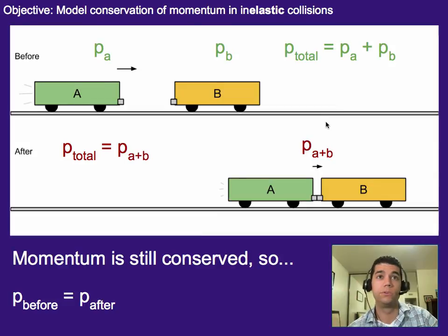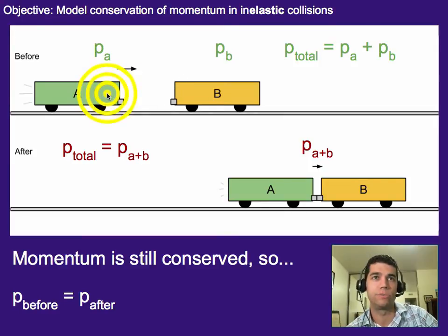Okay, so we're going to try and model what momentum would look like or conservation of momentum would look like in inelastic collisions. So we've got two carts here. One is moving, one is sitting still, and as cart A rolls towards cart B it hits it and it locks together and they move together afterwards.